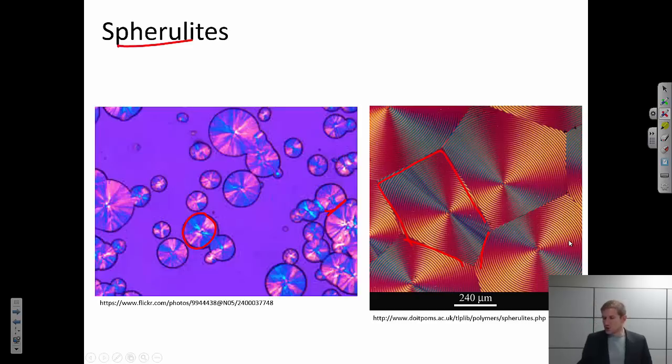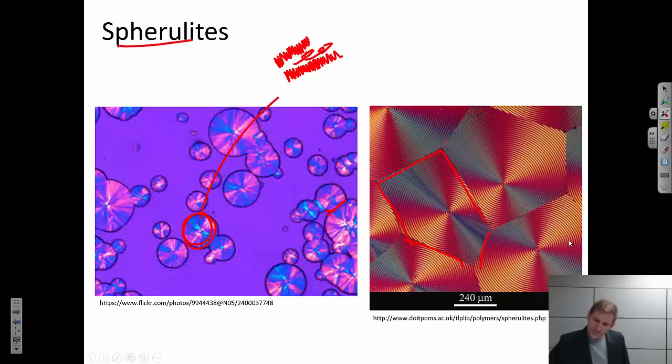And this is similar to a grain structure in metals. But if I zoom in, I look at one of those spheres, I find out that it's composed of lamella, so crystalline chain folded sheets, and regions of amorphous material in between. And then maybe I would have another lamella.